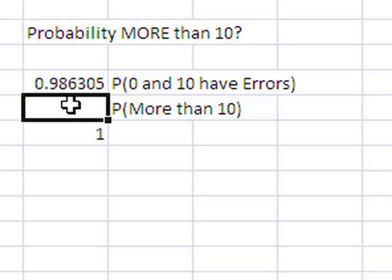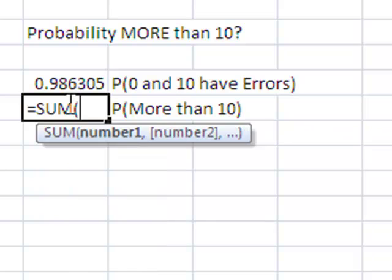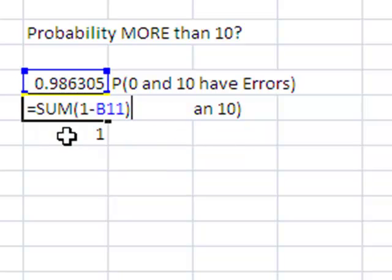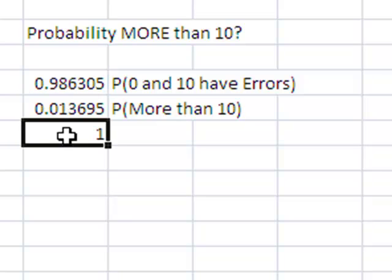I'm going to say equals, sum, parenthesis, and I'm going to say 1 minus 0.986305, close parenthesis, hit enter, and it tells me the probability that more than 10 have errors is 0.013695.